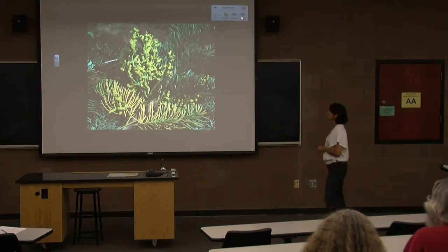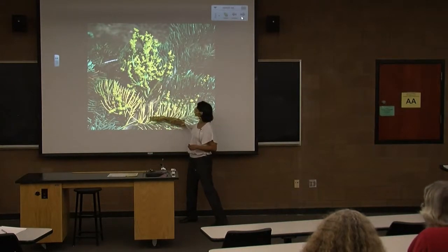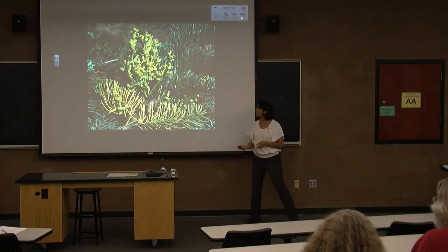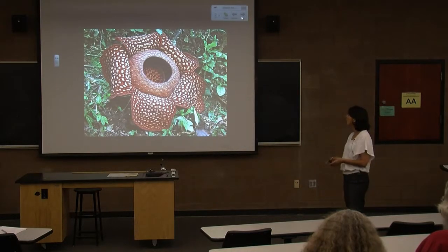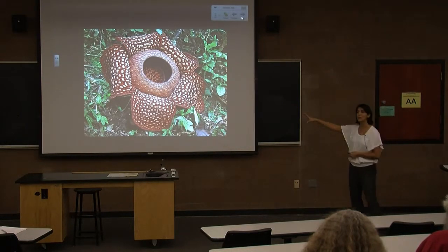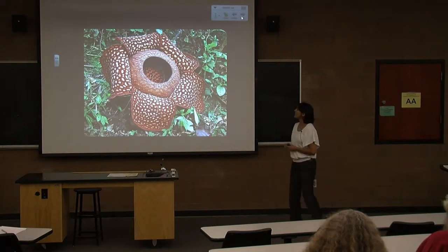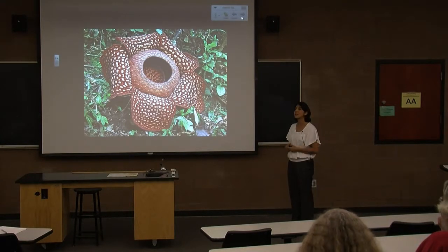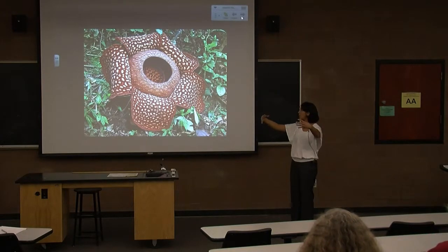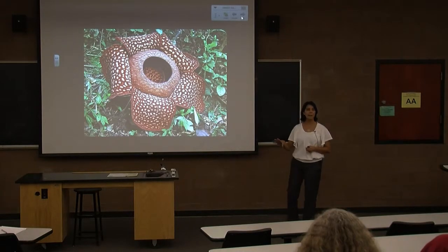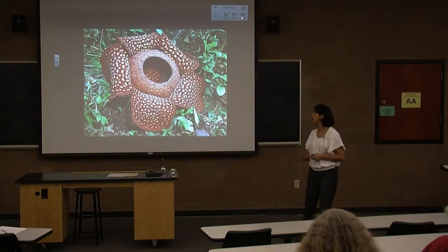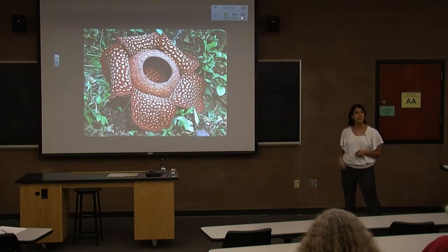Here's an example of a hemiparasite: dwarf mistletoe growing on a conifer. And here's a holoparasite — one of my favorites — called Rafflesia. It's highly reduced; all it really is is a flower, and most of the time it lives inside its host. This flower is the biggest flower known — the size of a tire — and it stinks because it's pollinated by carrion flies and insects looking for dead flesh.